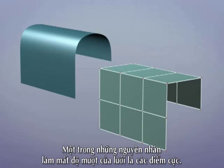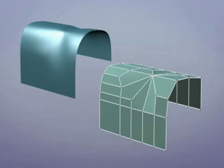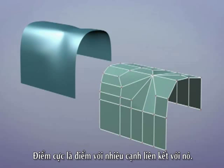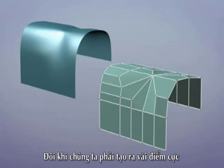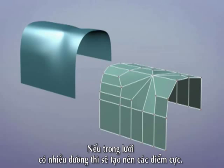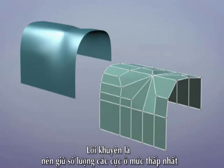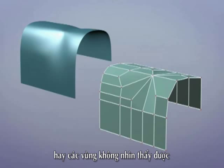Another cause of smoothing artifacts is poles. A pole is a vertex with many edges connected to it. To some degree poles are unavoidable, but bear in mind that the effect of this artifact becomes more severe the more edges make up the pole. Thus, it is advisable to minimize the number of poles, and where possible, to restrict poles to flat or inconspicuous areas.